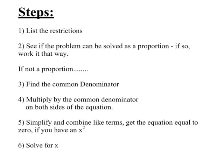Here are your steps. You want to list your restrictions first, then see if the problem can be solved as a proportion, and if so, work it that way. If it can't be worked as a proportion, find the common denominator, multiply both sides by it, then simplify and combine like terms. You want to get the equation equal to 0 if you have an x squared, and then you want to solve for x.